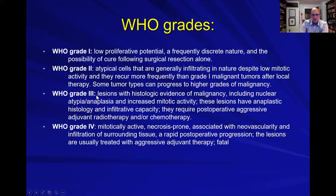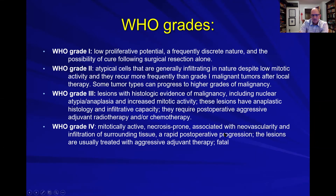Grade three tumors are where we start to see histological evidence of malignancy — nuclear atypia, anaplasia, and increased mitoses — with much greater infiltrative capacity. These tumors require post-operative aggressive adjuvant therapies like radiation therapy and chemotherapy. Grade four tumors are the most mitotically active, have necrosis and prominent neovascularity, are highly infiltrative, rapidly progressive, require aggressive treatment, and are universally fatal.